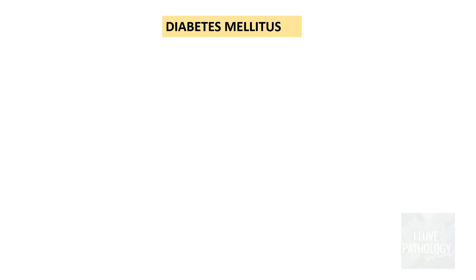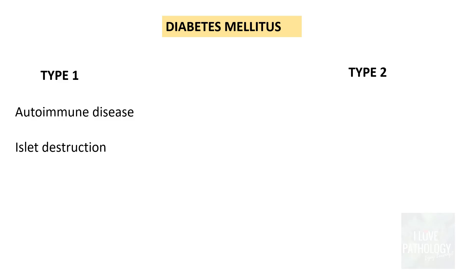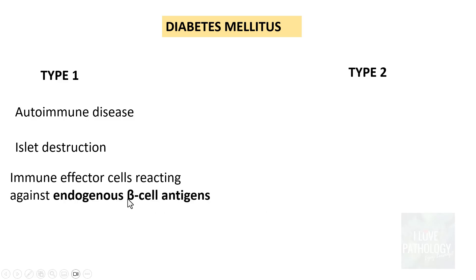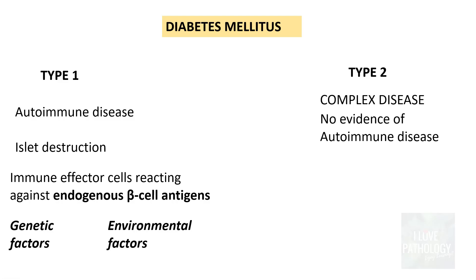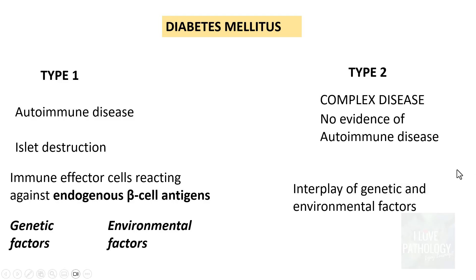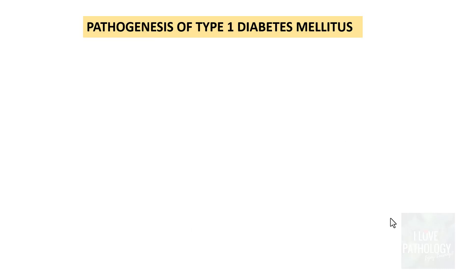Diabetes mellitus is classified broadly as type 1 and type 2. Type 1 is an autoimmune disease where there is destruction of islets, particularly because immune effector cells are reacting against our own endogenous beta cell antigens. This autoimmune disease is because of various genetic and environmental factors. Whereas type 2 diabetes mellitus is a more complex disease with no evidence of autoimmune disease, but there is an interplay of genetic and environmental factors and a pro-inflammatory state.